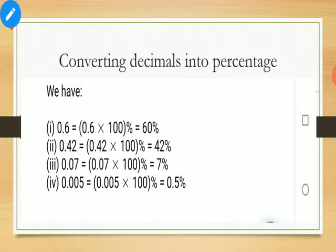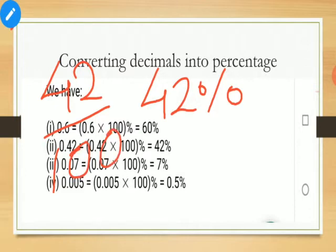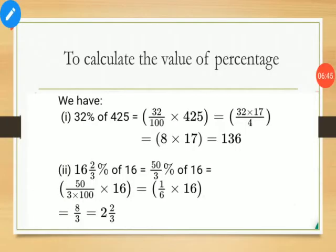Similarly, if a percentage is given and you have to convert it into decimal: suppose 42 percent is given. When the percentage sign is removed, the number is divided by 100. That means 42 percent means 42 out of 100. Now see the denominator — two zeros are there, so after two digits we place the decimal. So 42 percent converts to 0.42 as the decimal.